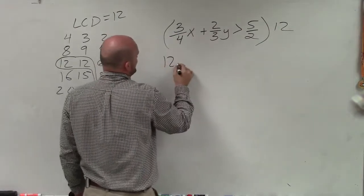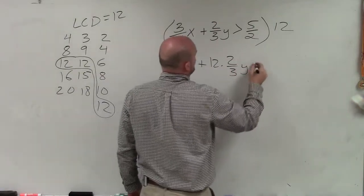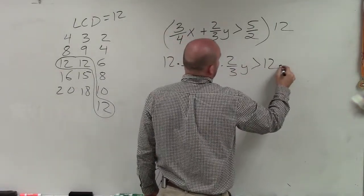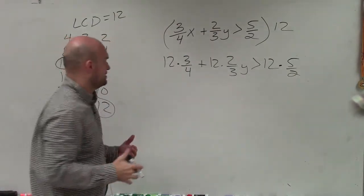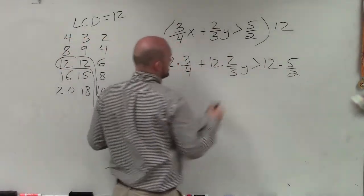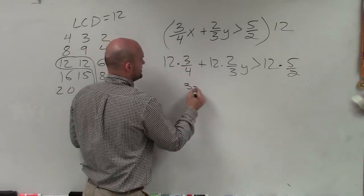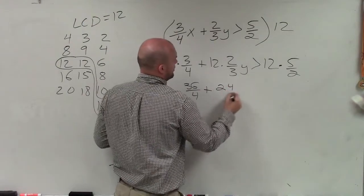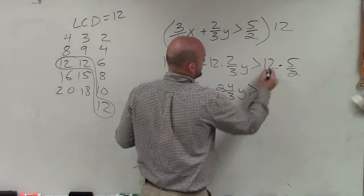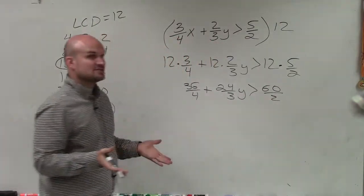So 12 times 3 fourths x plus 12 times 2 thirds y is greater than 12 times 5 halves. Now I'm going to do this two different ways. One way is you can multiply across so that you have a denominator that's even. So 12 times 3 would be 36 over 4 plus 12 times 2 is 24 over 3y is greater than 12 times 5, which is 60 over 2.